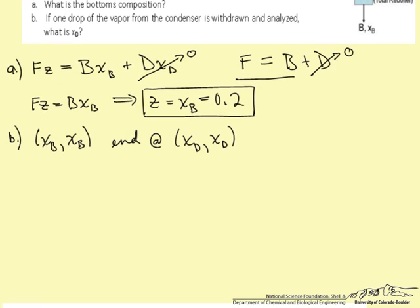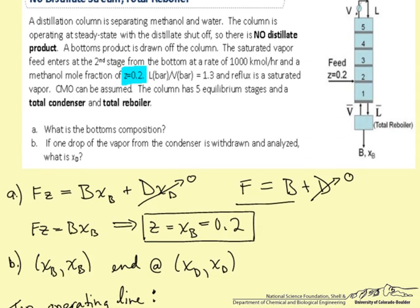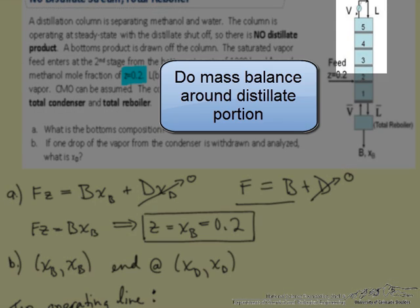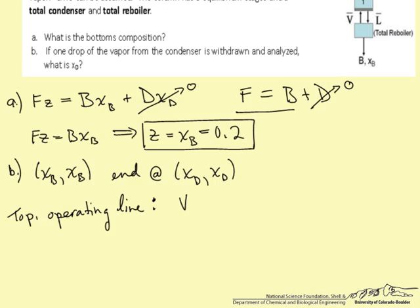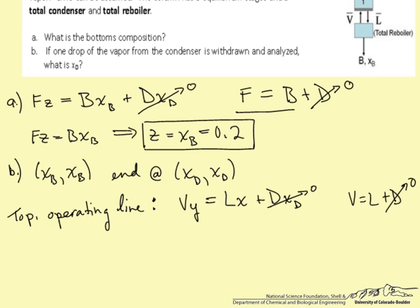In order to draw our plot, let's first determine the top operating line. We do a balance around the distillate portion of the column. This gives us: V·y = L·x + D·XD. Since D is zero, this term vanishes. The overall balance gives V = L + D, and D is also zero, so simplifying we find that Y equals X. This is our top operating line.